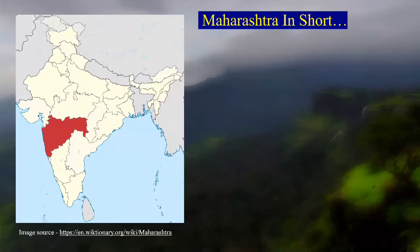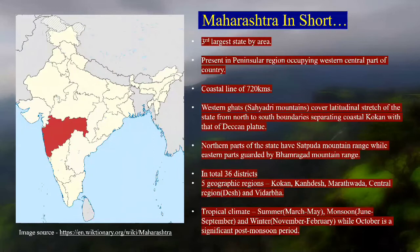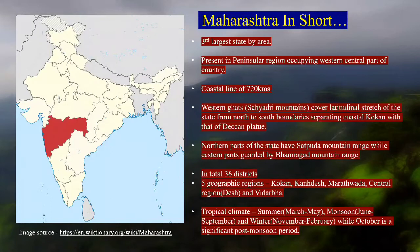Talking about Maharashtra as a state — many of you must know its geographic position. It is almost in the central western part of India, and it is one of the large-size states, present in the peninsular region. It has a coastline of about 720 kilometers.